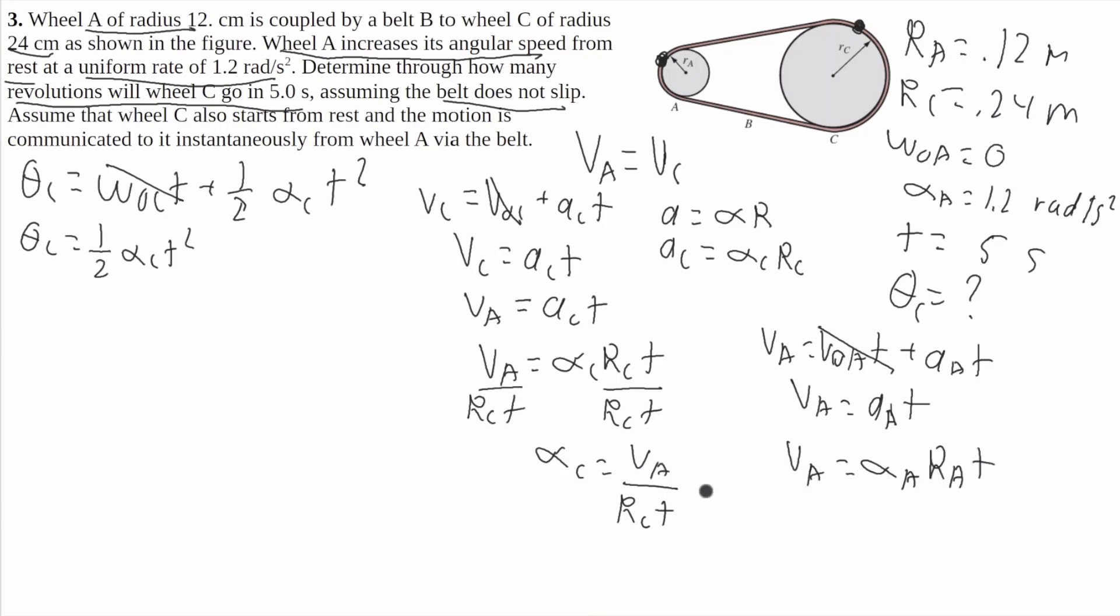And we'll get alpha C equals alpha A R A times time over R C T. The time will cancel out, and we'll get that alpha C equals alpha A R A over R C.